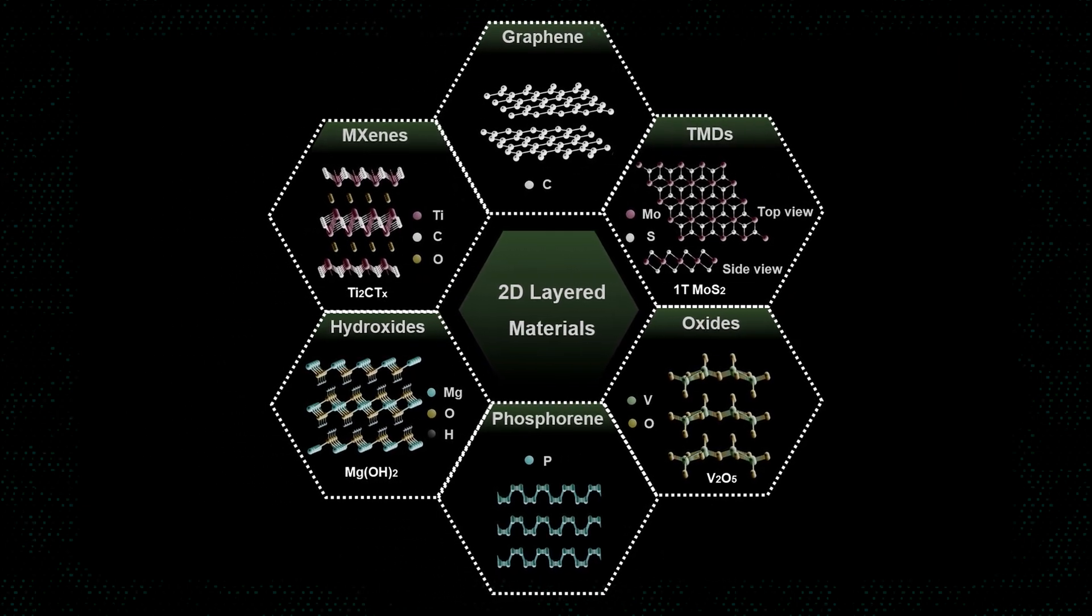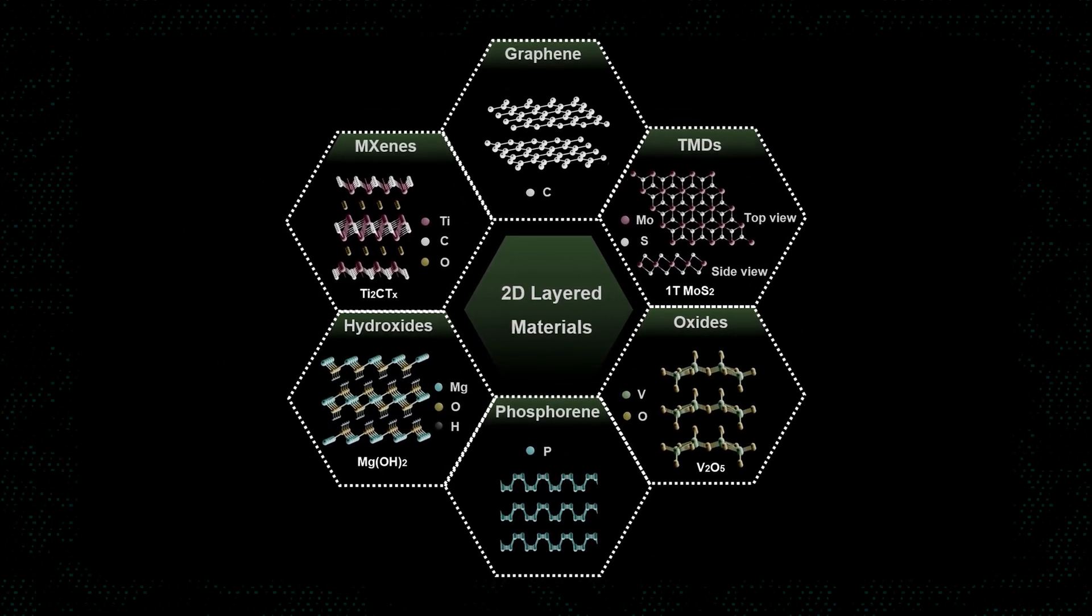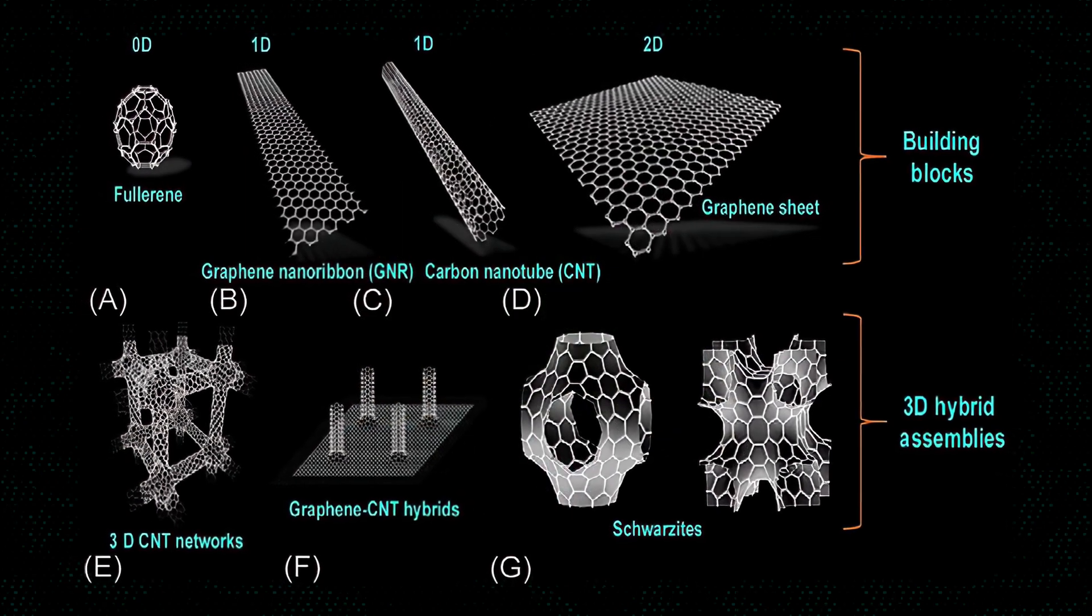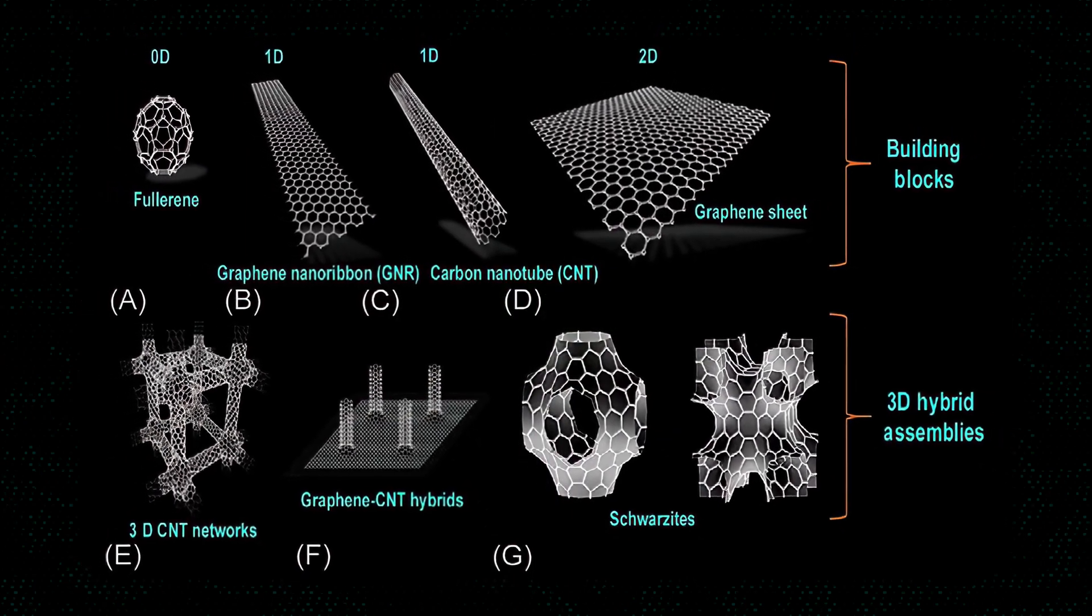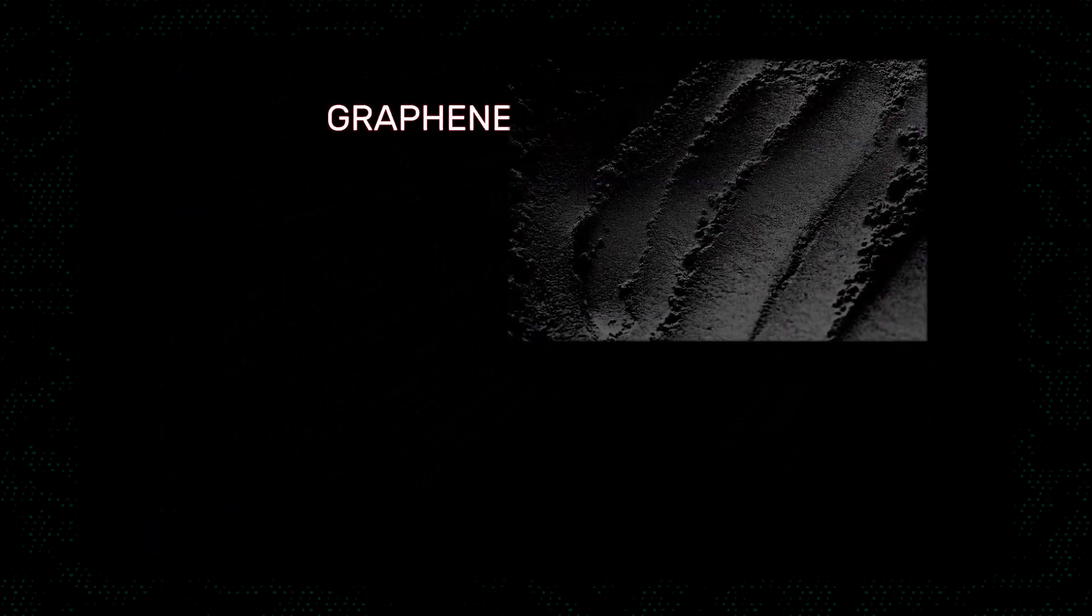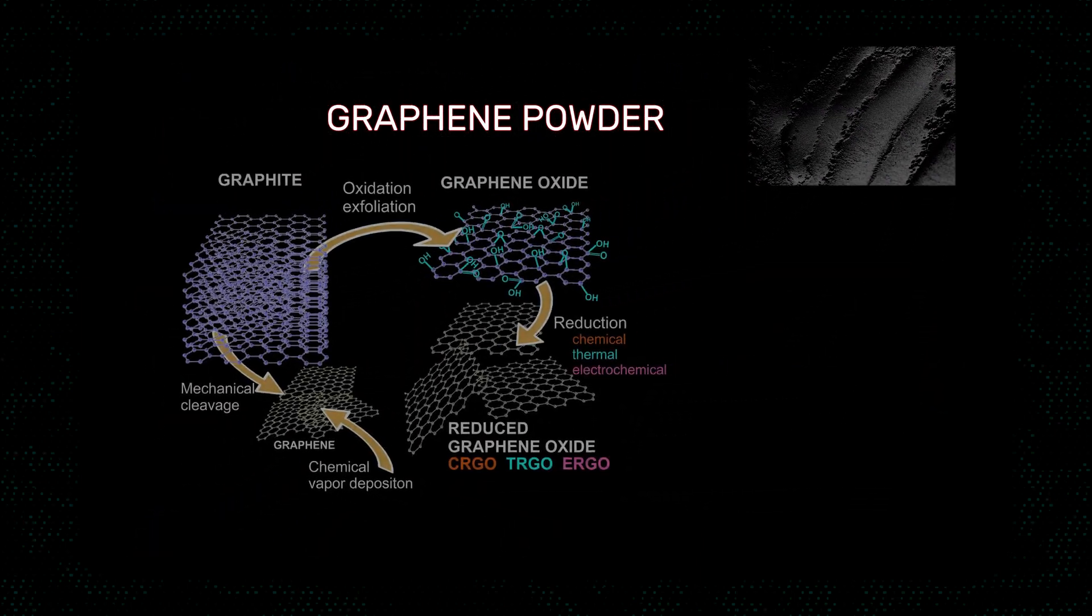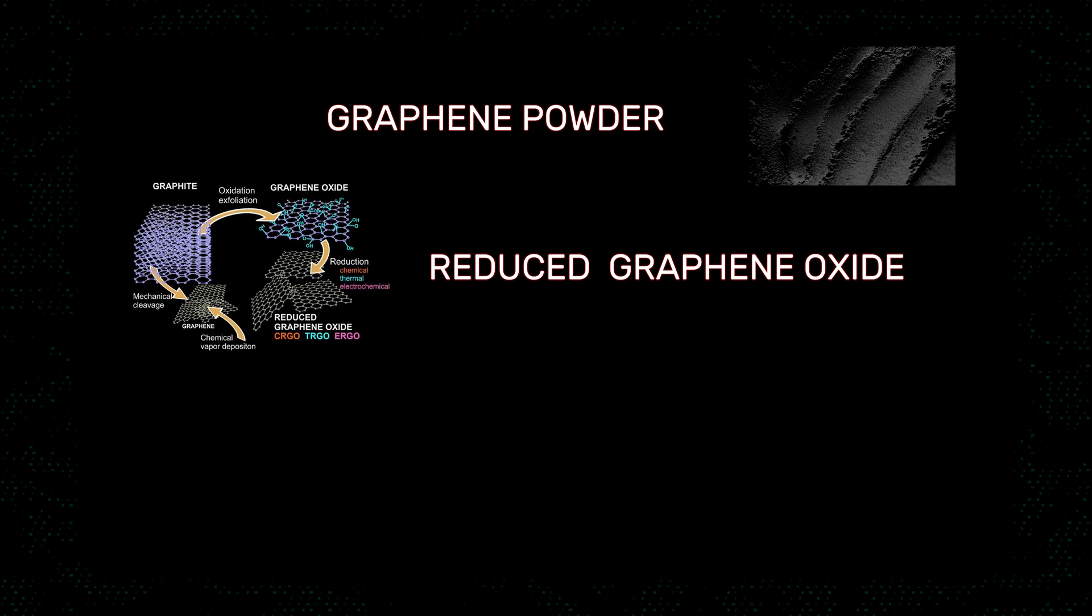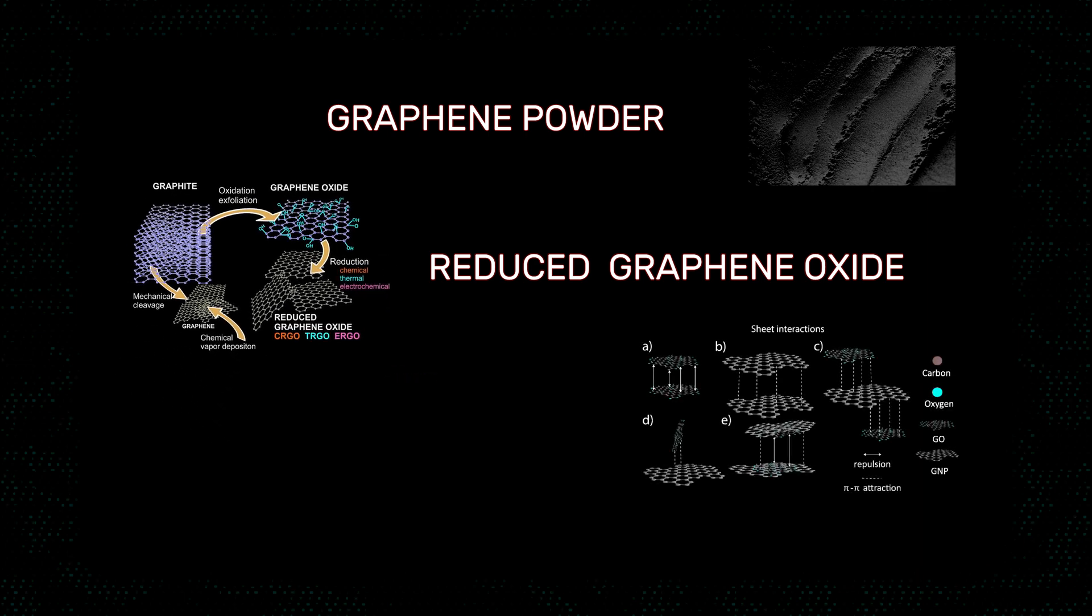Nanostructures often have different properties than the atoms which make them up, and these structures can also be used to make nanomaterials, further changing their behavior. For example, graphene can be made into a powder, a reduced oxide, graphene nanoplatelets, or graphene quantum dots.